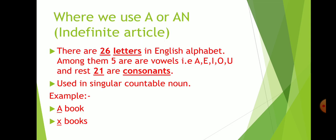Next, where we use a or an, that is indefinite article. So, there are 26 letters in English alphabet. All of you know that. Among them, 5 are vowels, that are a, e, i, o and u. And rest, 21 are consonants.